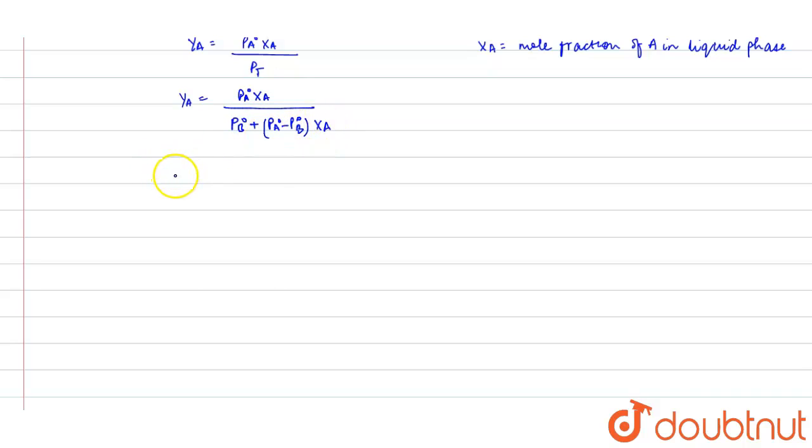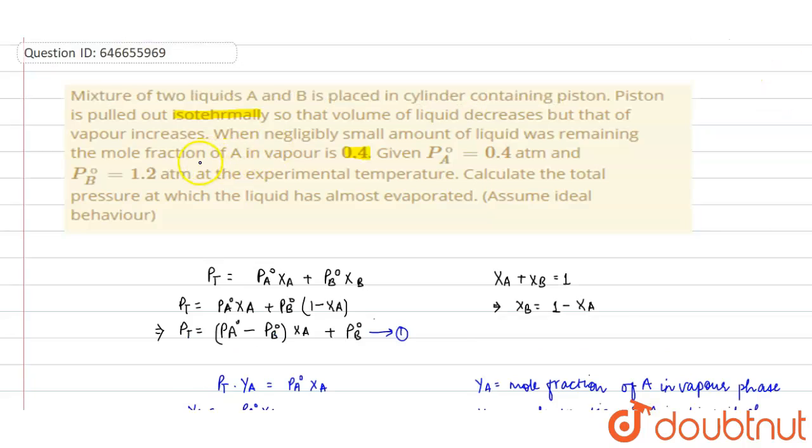Now put all the values. The value of Y_A given in the question is 0.4—that is, mole fraction of A in vapor phase is 0.4.